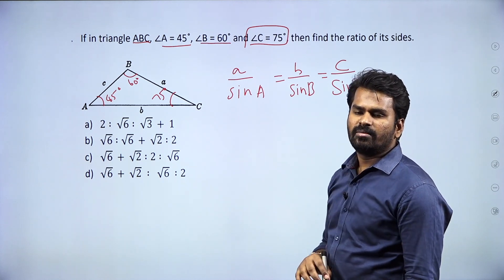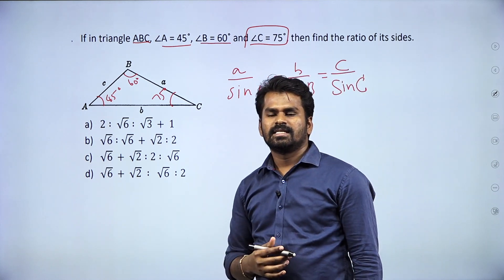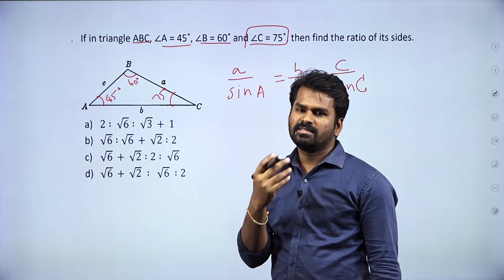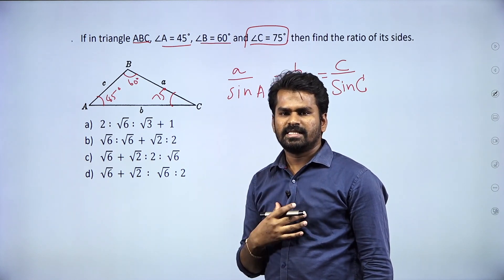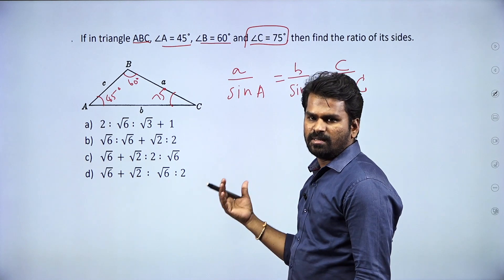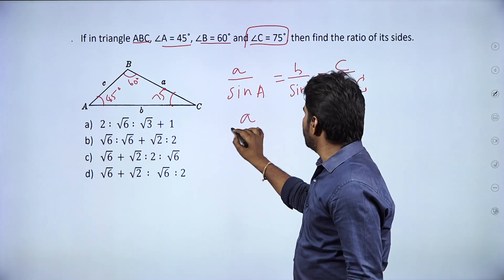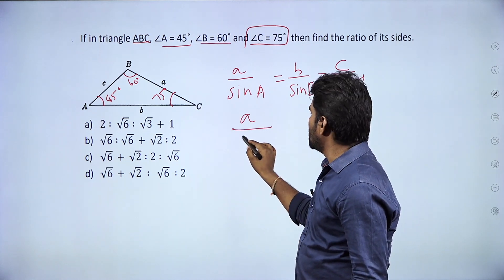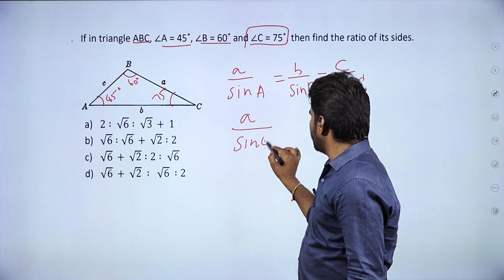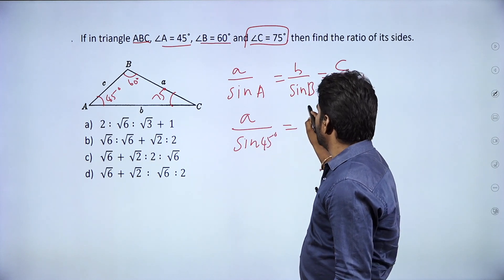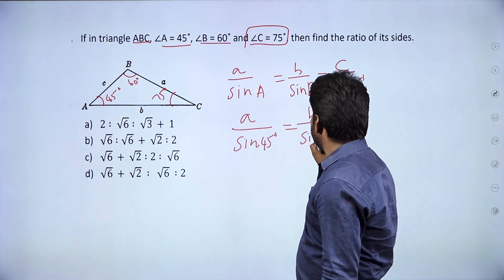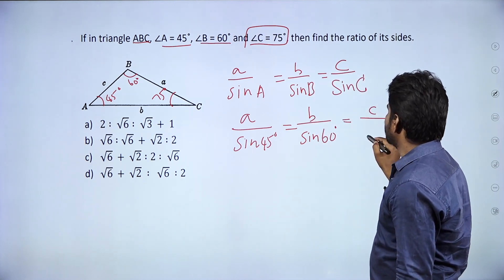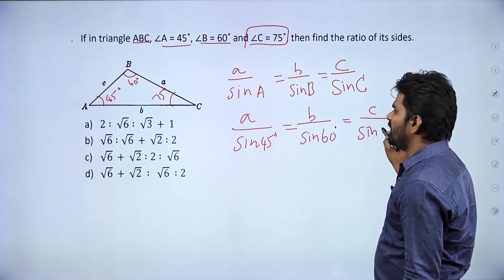So we write a divided by sin A, where angle A is 45 degrees, b divided by sin B where angle B is 60 degrees, and c divided by sin C where angle C is 75 degrees.